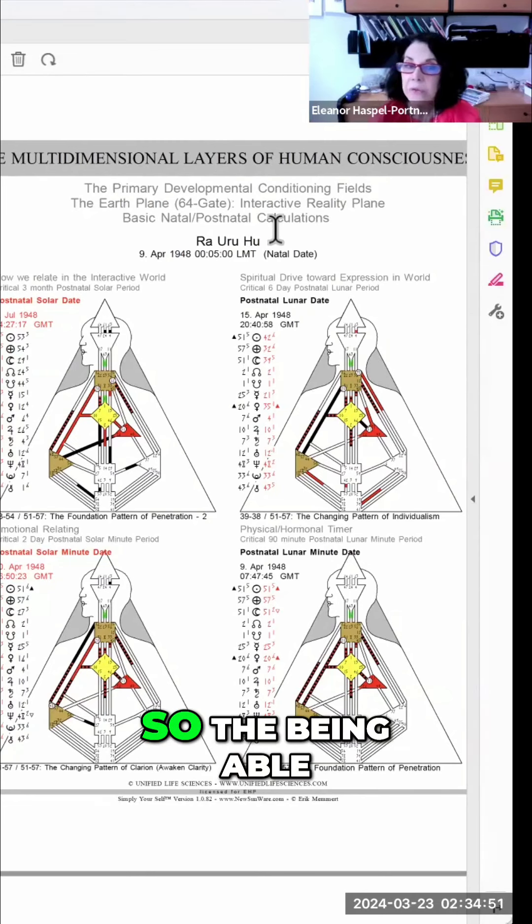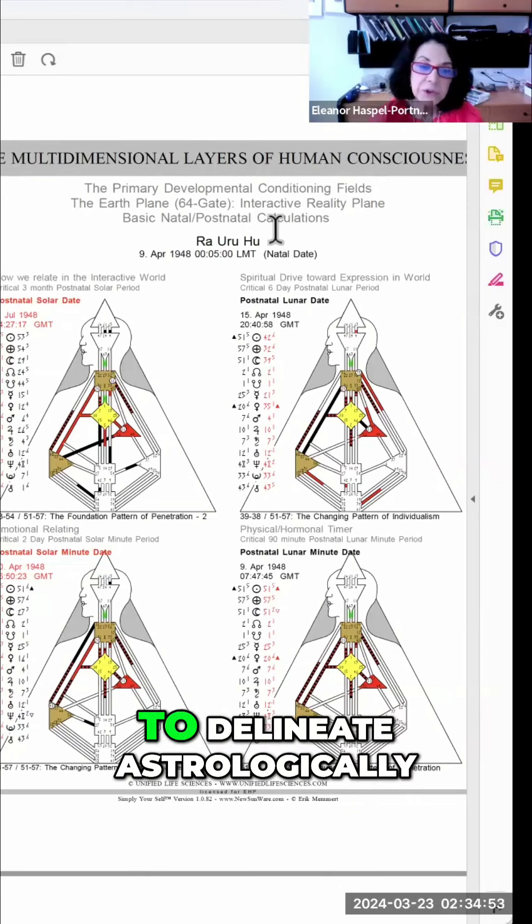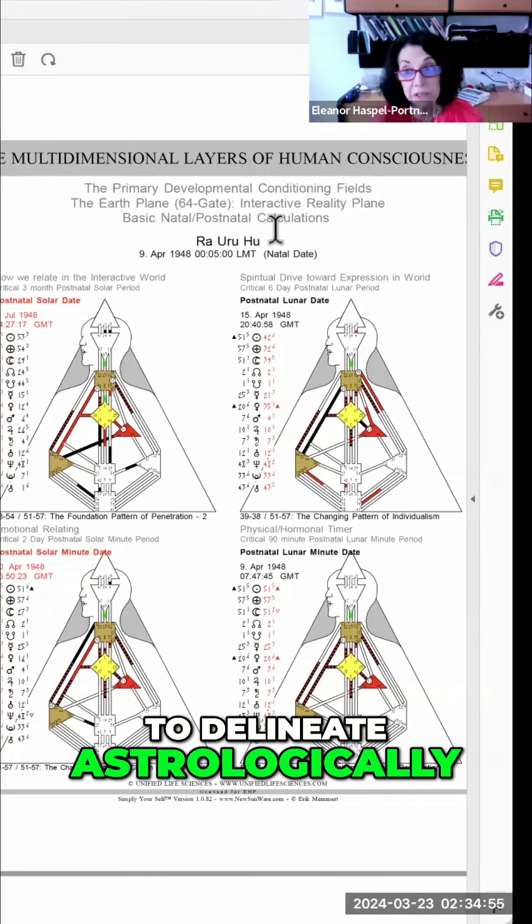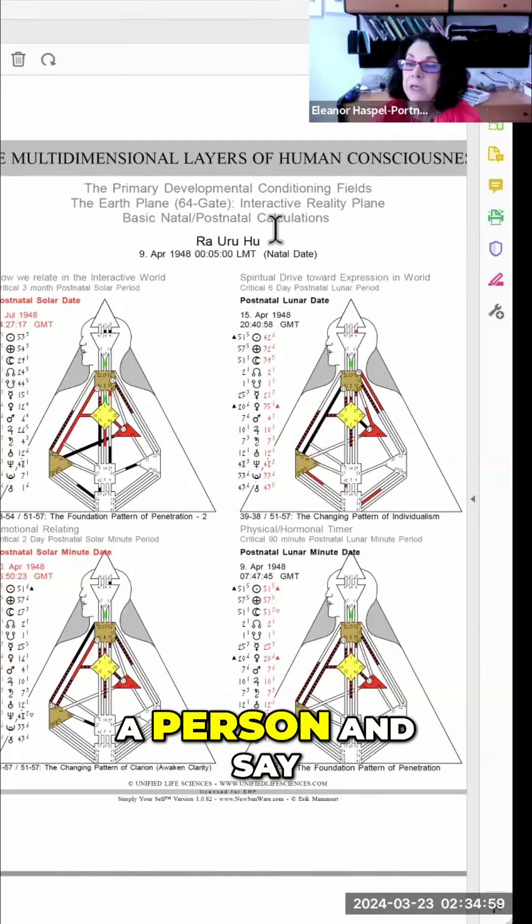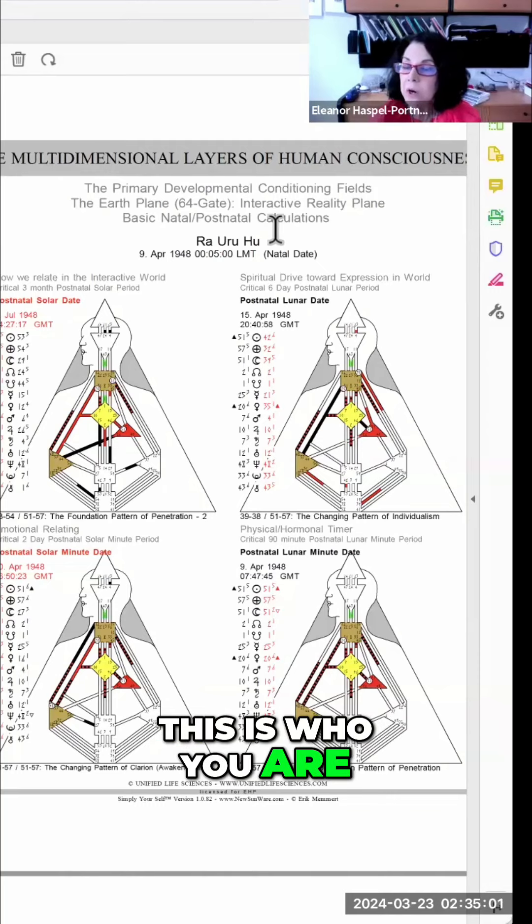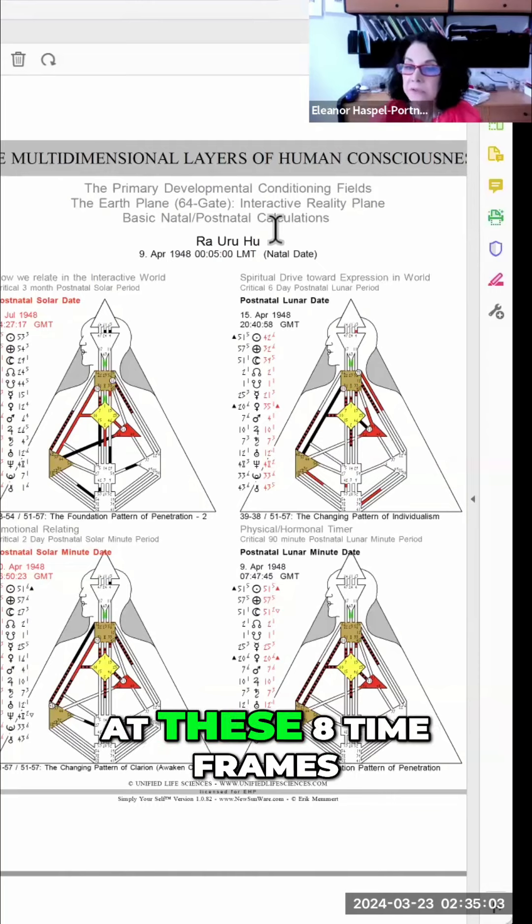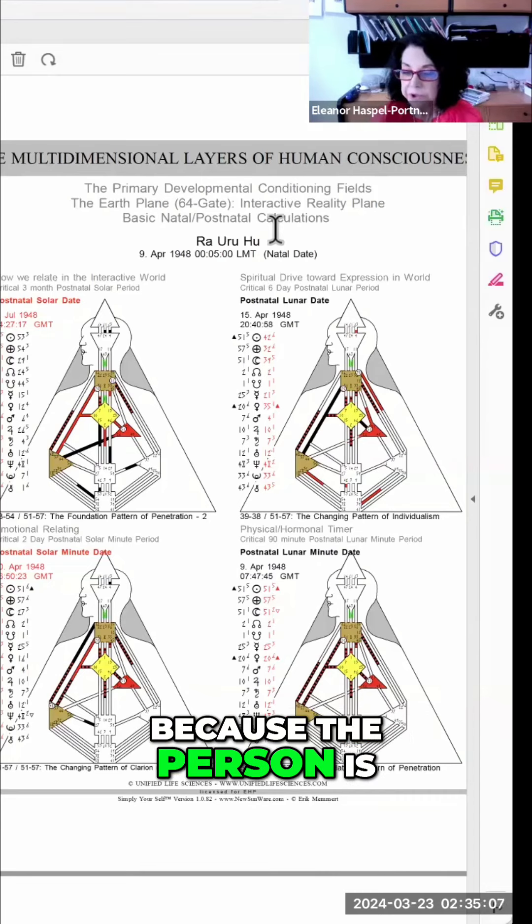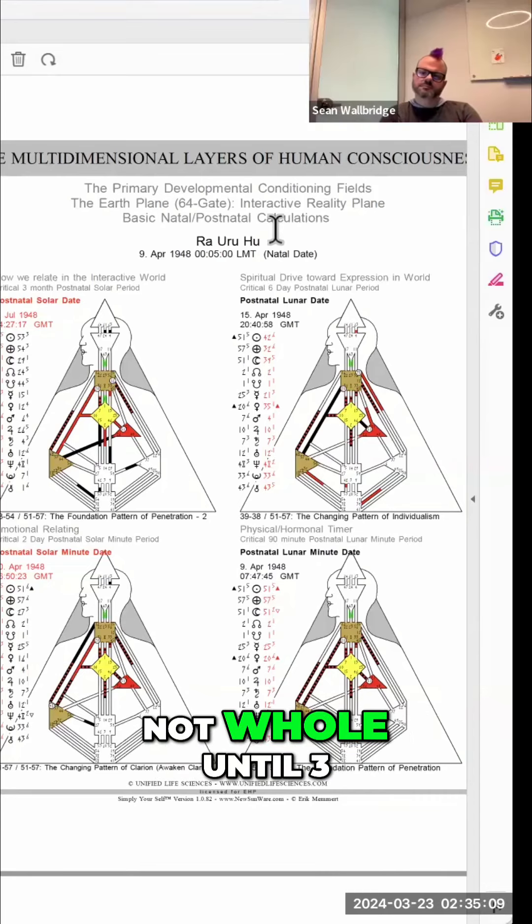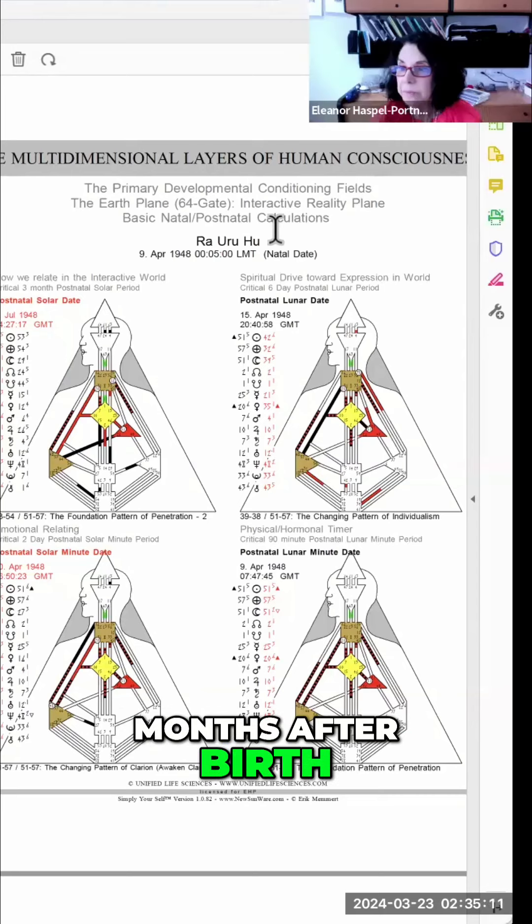So being able to delineate astrologically, that if we're going to really look at a person and say this is who you are, we need to look at these eight timeframes, because the person is not whole until three months after birth.